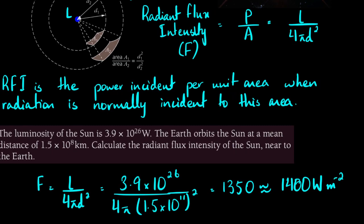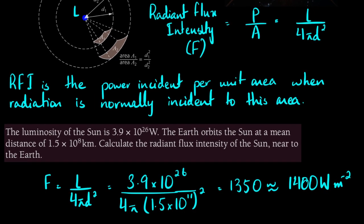That sums up this lecture, which covered luminosity and radiant flux intensity. In upcoming lectures, we'll look at how the luminosity of stars is determined and how luminosities help us find the radii of stars — one of the questions posed at the very start of this unit. Stay tuned for the answers in the next couple of videos.